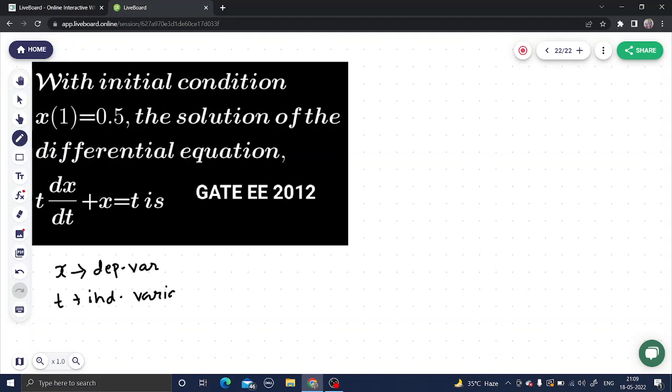So basically two variables are there. The value of x at t equals 1 is given to be 0.5. This will be used to find the value of the constant.